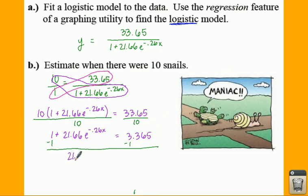You're going to get 21.66 e to the negative 0.26x equals 2.365. Believe it or not, I'm doing all this without a calculator. So you're going to end up with e to the negative 0.26x equals 0.10992.